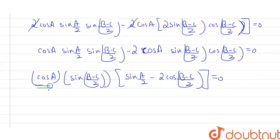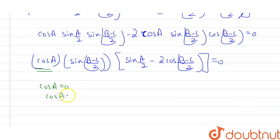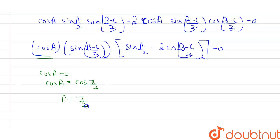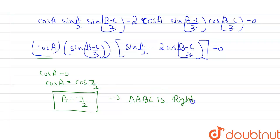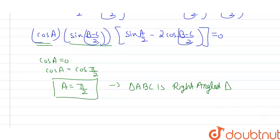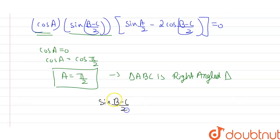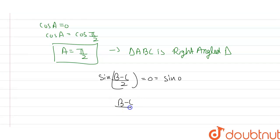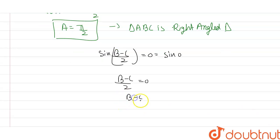Case 1: cosA = 0. We know cosA = 0 when A = 90° (i.e., A = π/2). So if any angle of the triangle equals π/2, then triangle ABC is a right-angled triangle. Case 2: sin((B-C)/2) = 0, which means (B-C)/2 = 0, so B - C = 0, therefore B = C.